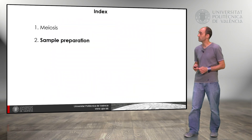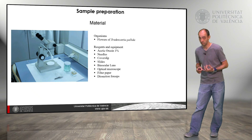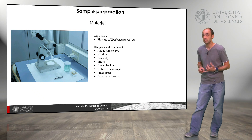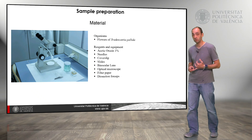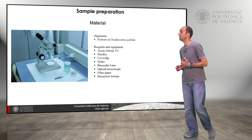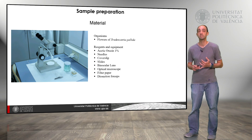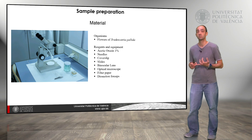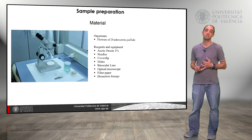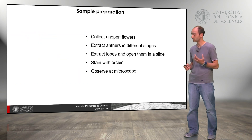What is sample preparation? We need some organisms — in this case flowers — and we need some materials like orcein to stain the cells, needles, covers, slides, blades, and different paper to use.